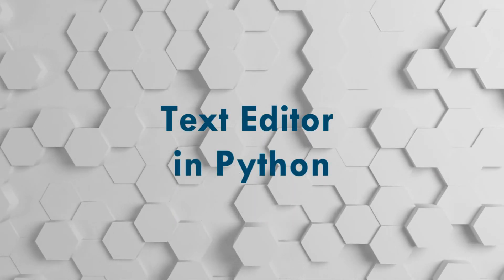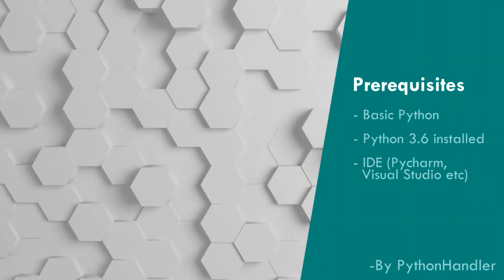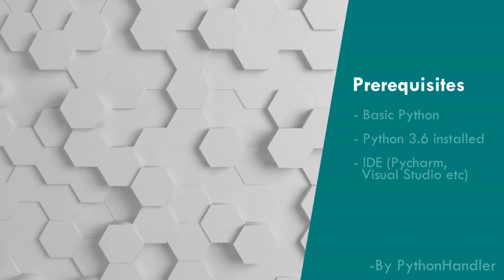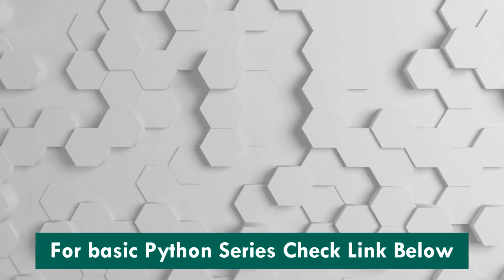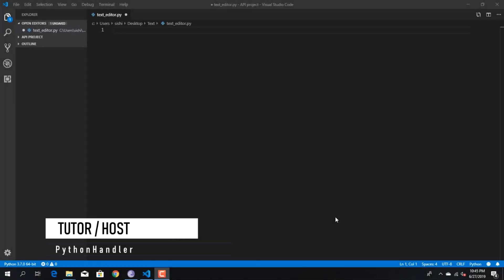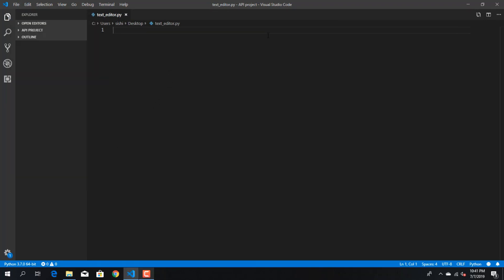What's up everyone, it's Python Handler from FocusOS and I'm back with a full mini project using Python. In this video we'll be creating a text editor from scratch. I'm going to be using Visual Studio Code to complete this project, but you can also use other editors as well. The concept we are going to be using in this project is called GUI, or graphical user interface. In our text editor we're going to have a File option, and inside it we're going to have New File, Open File, Save, Save As, and Exit as menus.